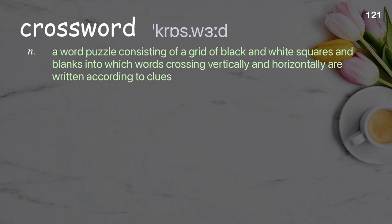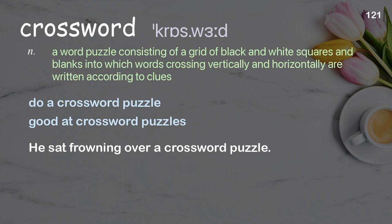Crossword: A word puzzle consisting of a grid of black and white squares and blanks into which words crossing vertically and horizontally are written according to clues. Examples: Do a crossword puzzle. Good at crossword puzzles. He sat frowning over a crossword puzzle.